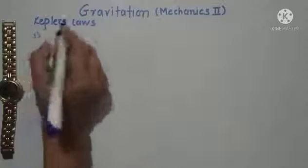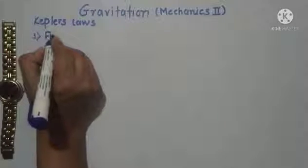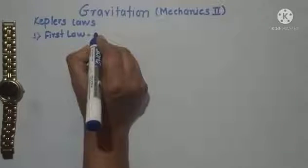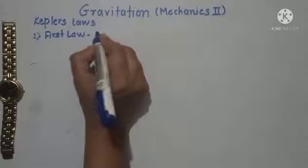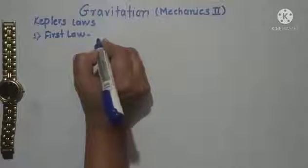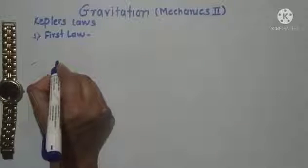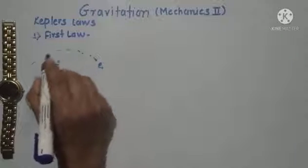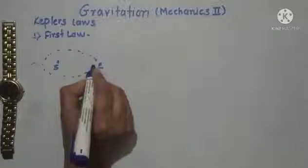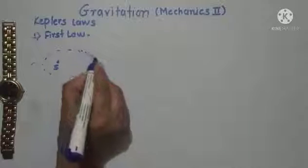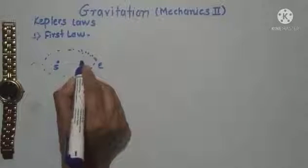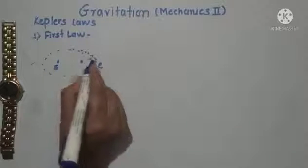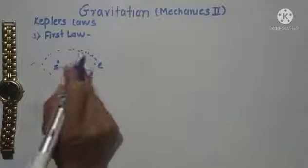The first law says that every planet revolves around the Sun in an elliptical orbit with the Sun as one of the foci. Suppose this is the Sun and this is the Earth, so it is moving in an elliptical orbit. An ellipse has two foci, and the planet revolves around the Sun with the Sun as one of those foci.